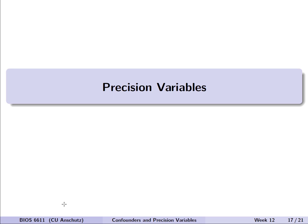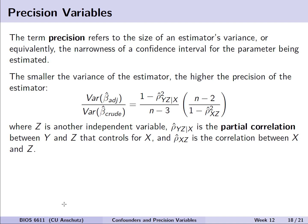Let's turn our attention to precision variables — another role a variable might play in a regression modeling framework. The term precision refers to the size of an estimator's variance, or equivalently, the narrowness of a confidence interval. A more precise estimate has a narrower confidence interval. If we let z be some independent variable in our model, we can write the variance of beta hat adjusted and beta hat crude for our primary explanatory variable using an equation involving correlations and partial correlations — specifically the partial correlation between y and z controlling for x, and the correlation between x and z.